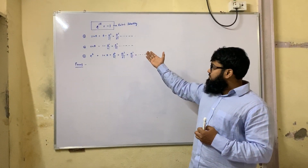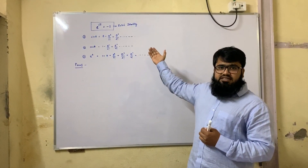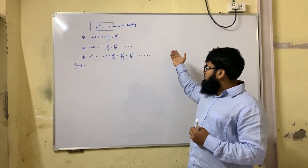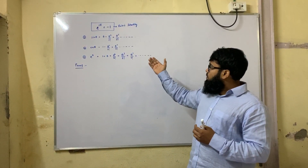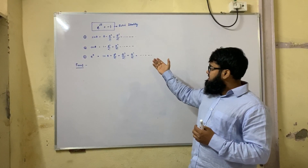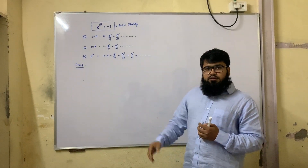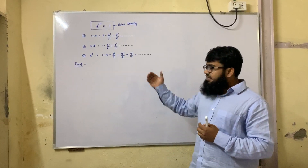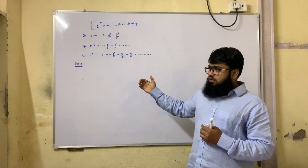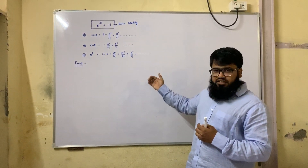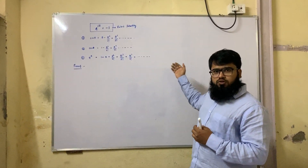The Taylor series of sin theta is: theta minus theta cube by 3 factorial plus theta raise to 5 by 5 factorial plus dot dot dot. Cos theta is: 1 minus theta square by 2 factorial plus theta raise to 4 by 4 factorial, and so on. e to the power theta is: 1 plus theta plus theta square by 2 factorial plus theta cube by 3 factorial plus theta raise to 4 by 4 factorial plus dot dot dot.